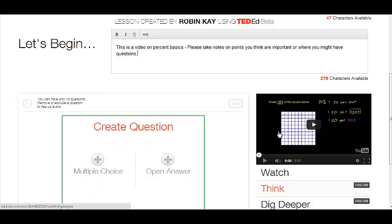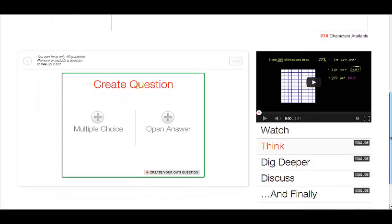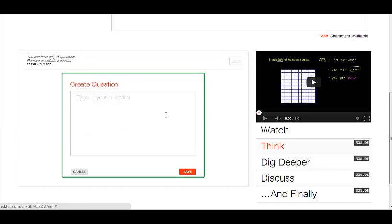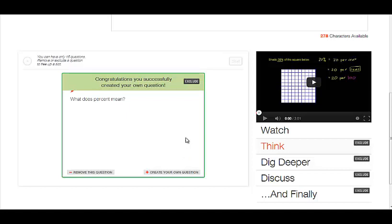And now I'm going to go to think. And which is really neat is I can create an open-ended answer question or a multiple choice question. Let me create an open answer question here. And my question is what does percent mean? So I want to know what the students think that means. I'm just going to save that. And that's a question that they would have to answer. And I can create more questions if I want. But those are questions that students will look at.